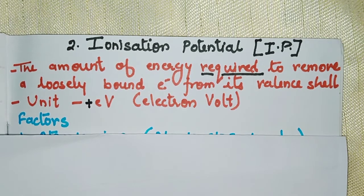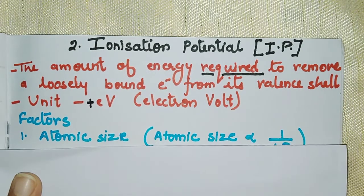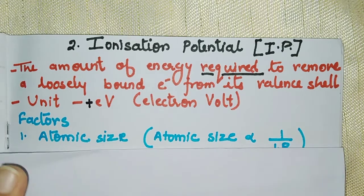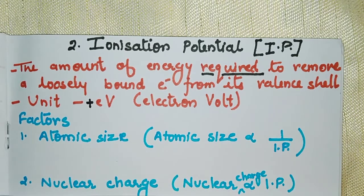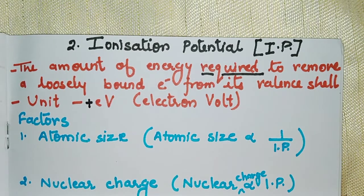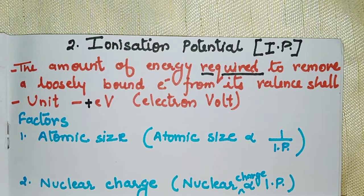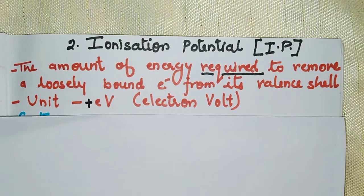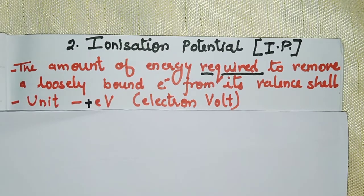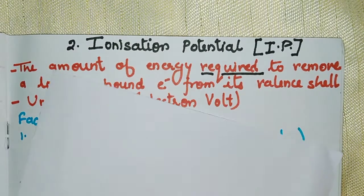The factors affecting ionization potential are atomic size and nuclear charge. First of all, let us understand ionization potential by taking the example of magnesium.